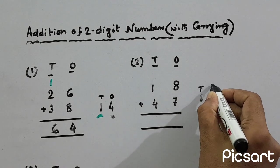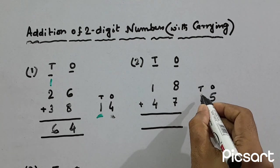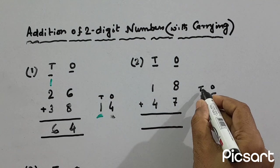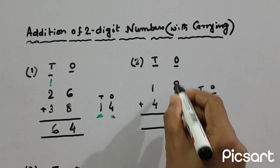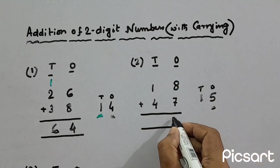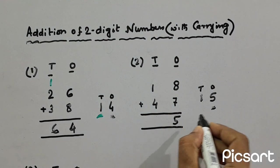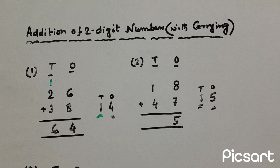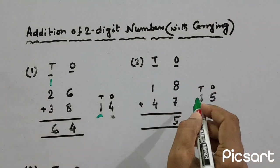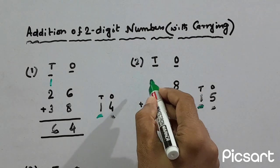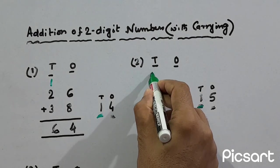Now this is one ten and five ones. So these five ones we'll write under ones column. And this number, that means one ten, will bring in tens column. So we'll write one here.